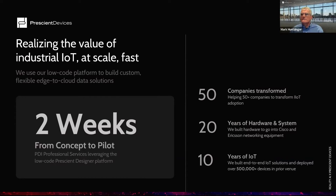Thanks Nalan. I'll talk for a few minutes about Prescient Devices and what we do. We help our customers realize the value of industrial IoT at scale very quickly. Our key product is called Prescient Designer, and it's an intelligent low-code platform to build flexible edge-to-cloud data solutions. Often we can help our customers get to a pilot project from a concept in two weeks or less. It can be our customers that do the development, or we have a professional services group that does the development as well.